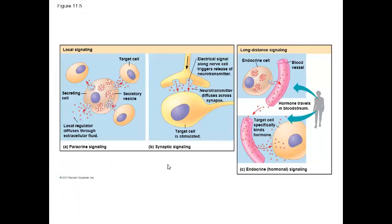In paracrine signaling, we have a cell called a paracrine gland that releases a chemical messenger called a local regulator over a very short distance. This is usually released into local tissues, and it's going to affect all nearby target cells, causing them to have a response. One important local regulator within the body is the growth factor, which causes target cells to go through cell division. This might be released to repair damage or cause growth in a particular area.